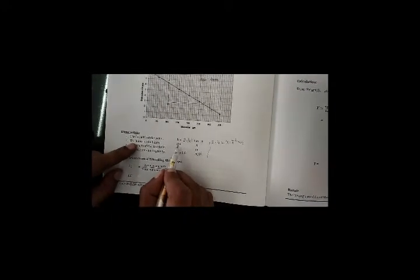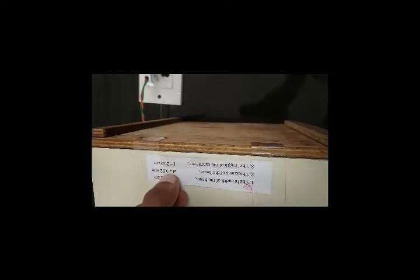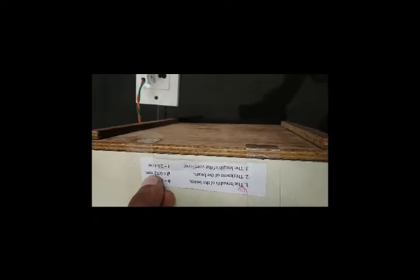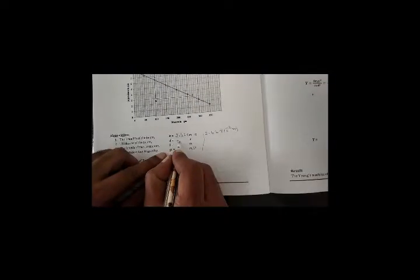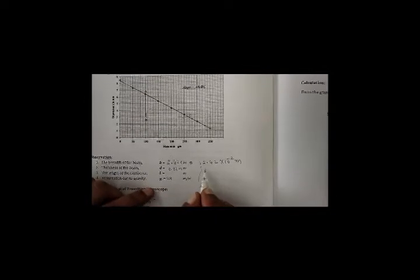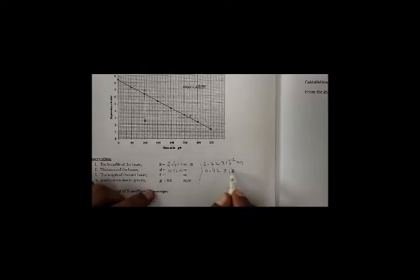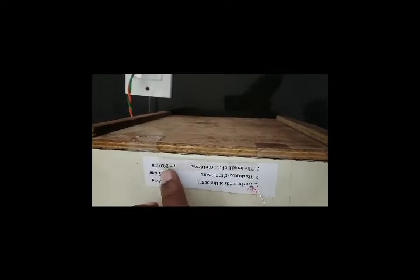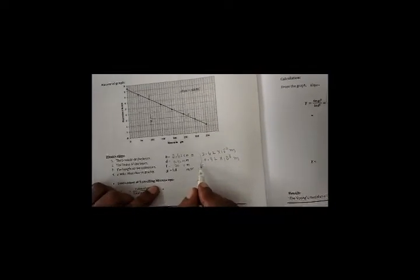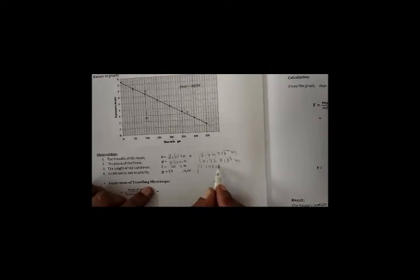The thickness of the beam D can be measured using a screw gauge, but in this experiment it is already given. D = 0.92 mm, which is 0.92 × 10⁻³ meters. Next, L is the length of the cantilever from the fixed point to the free end, and it is also given: L = 20 cm, which equals 20 × 10⁻² meters.